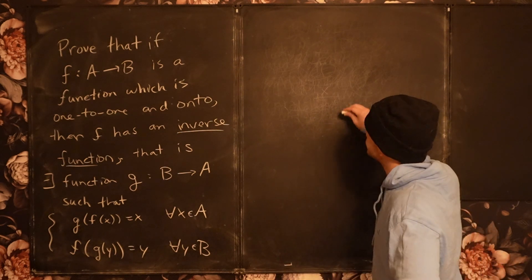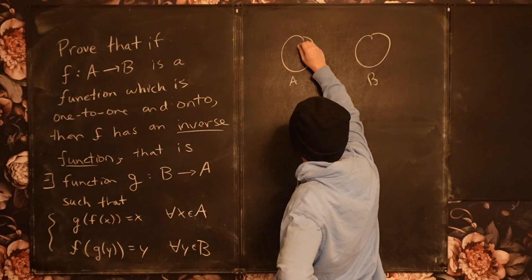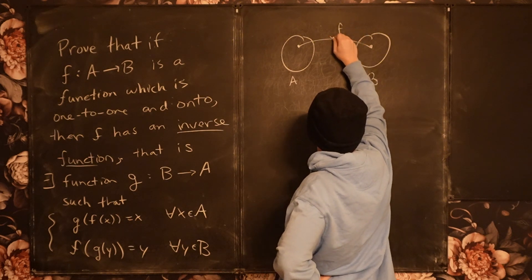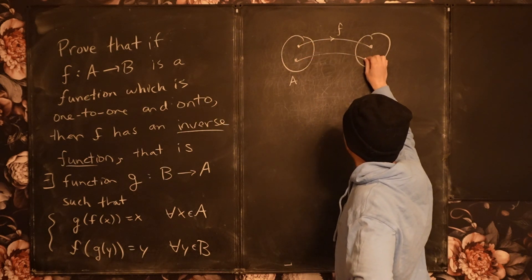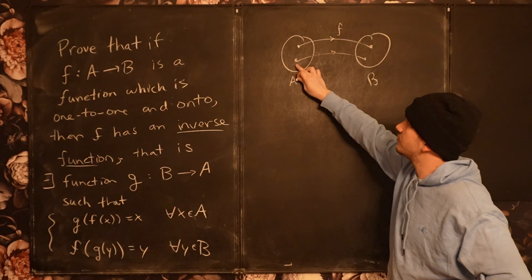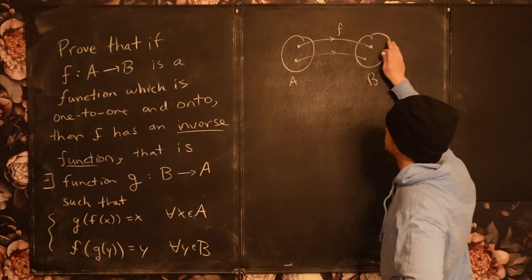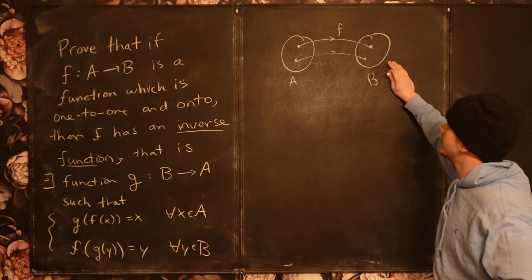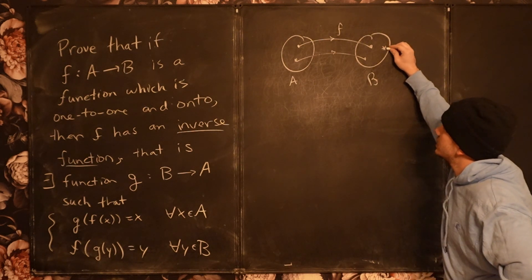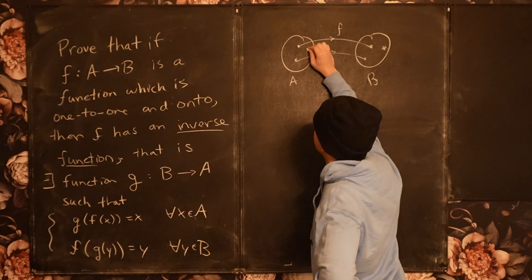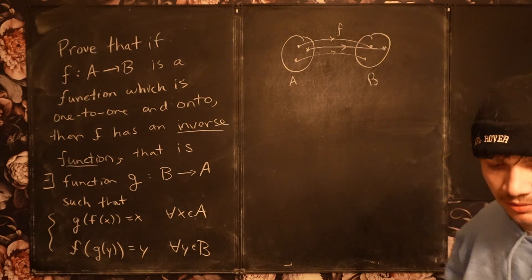Let's first just visualize what's going on here. I have a set A and a set B. I have a map f which sends points of A into points of B. The one-to-one condition tells me that if I have two distinct points in A, they get mapped to distinct points of B — I can never have two points in A getting mapped to the same point in B. And then the onto condition tells me that everything in B gets hit by something in A. If I pick an arbitrary point in B, then I know it has to come from somewhere in A — it has to be the image of some point a under the function f.